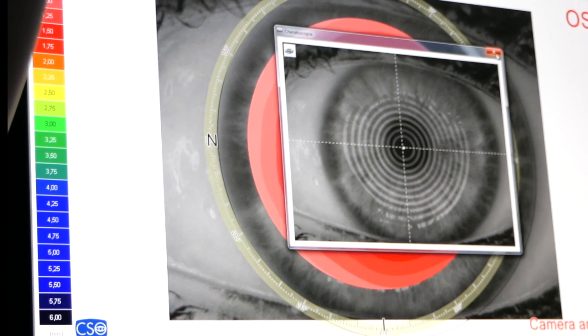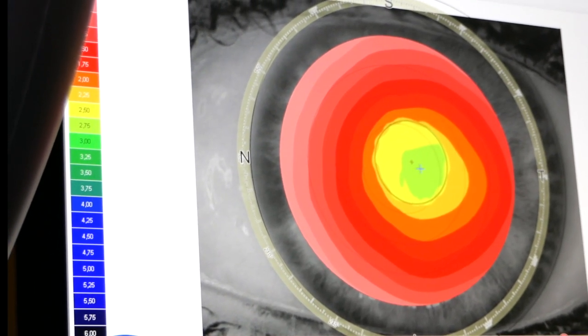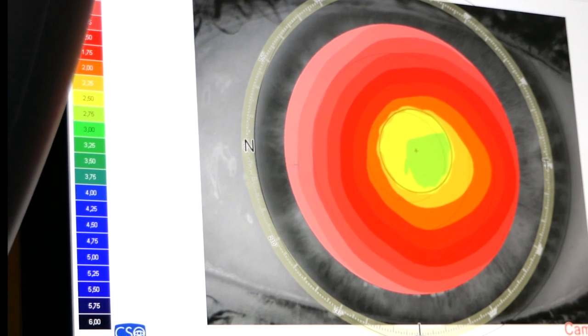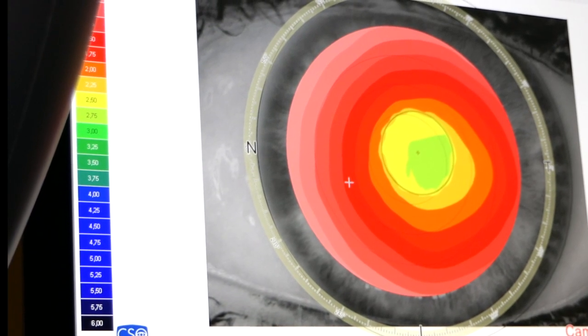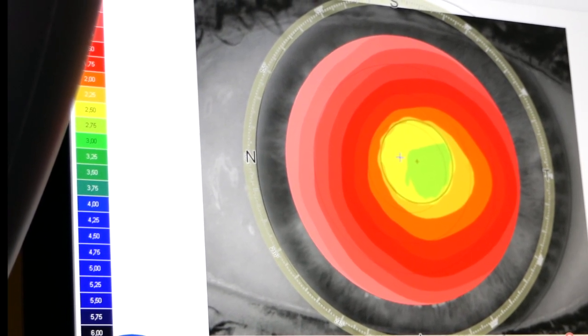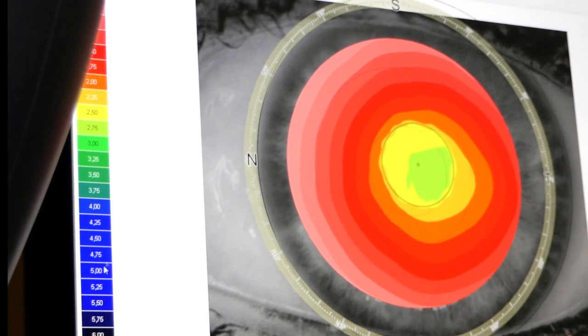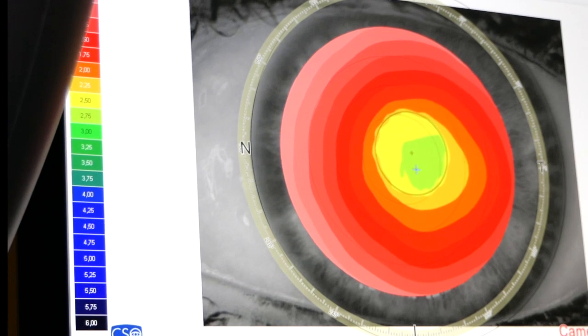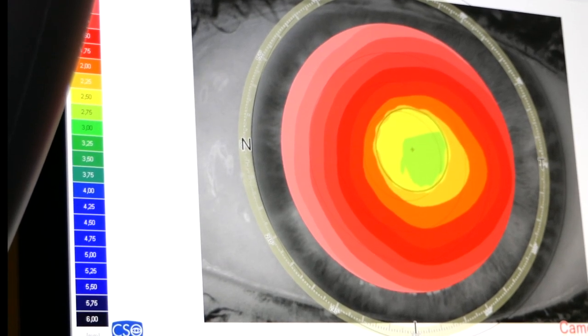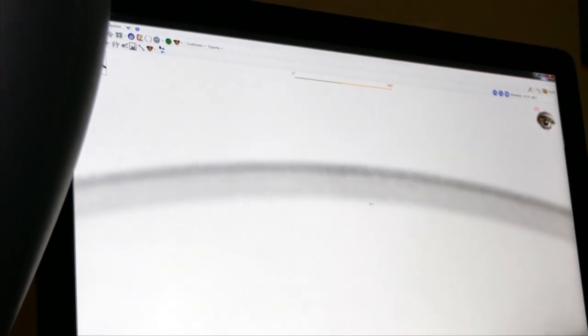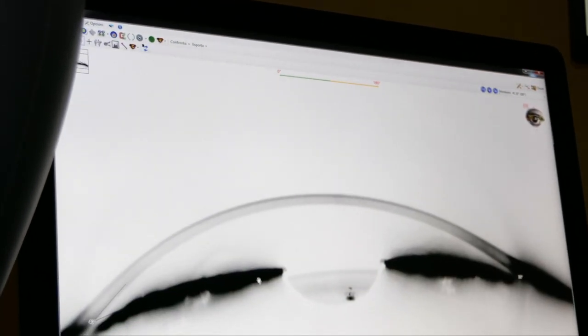The topographer also allows us to see the anterior chamber. Behind the cornea, which is transparent, there is the iris and then the crystalline lens. Since the cornea is transparent, the topographer manages to measure the space that divides the cornea from the crystalline iris plane. This space is represented in millimeters.